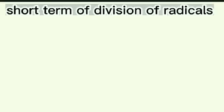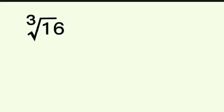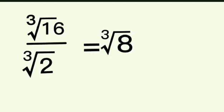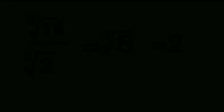So how about the short method for division of radicals? Cube root of 16 over cube root of 2. Simply divide: 16 divided by 2 is equal to 8, then copy the cube root. So it becomes cube root of 8. What is the cube root of 8? It is 2, because 2 times 2 is 4, times 2 is 8. So the answer is 2.